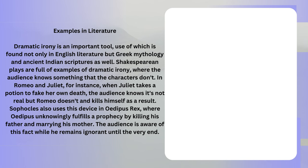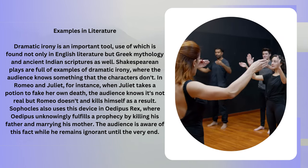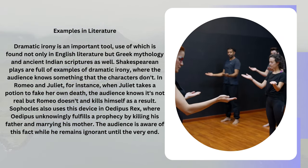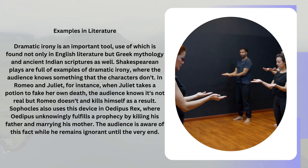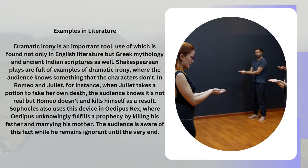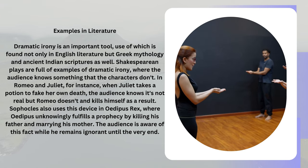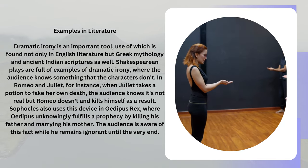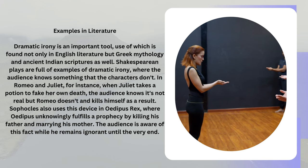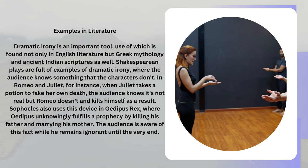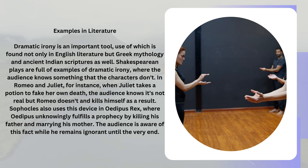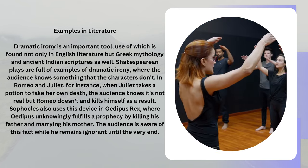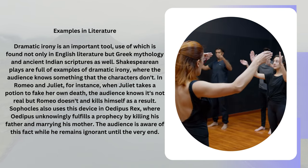Dramatic irony is an important tool, the use of which is found not only in English literature but in Greek mythology and ancient Indian scriptures as well. Shakespearean plays are full of examples of dramatic irony, where the audience knows something that the characters don't.